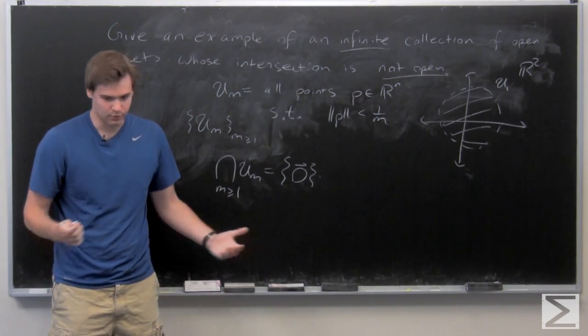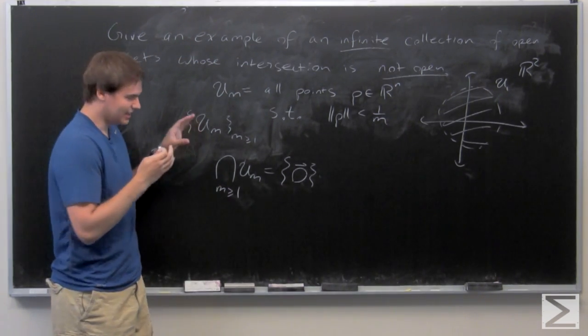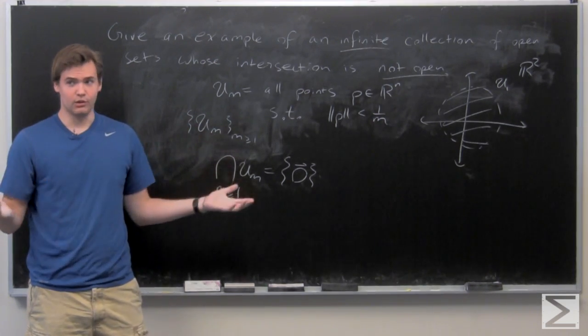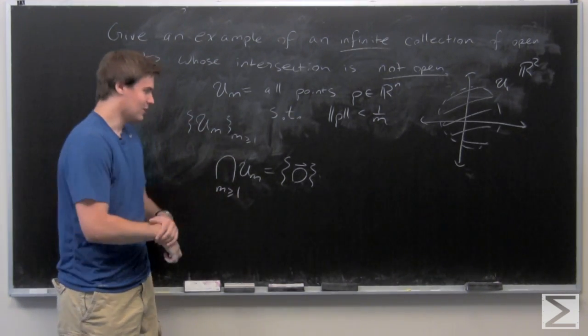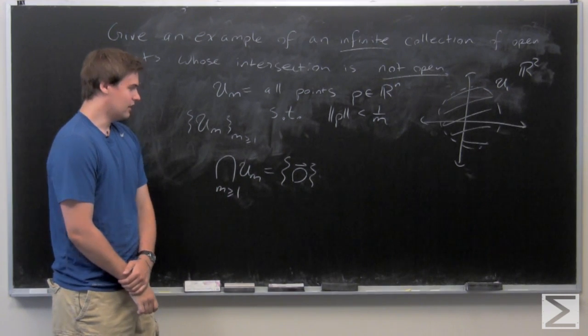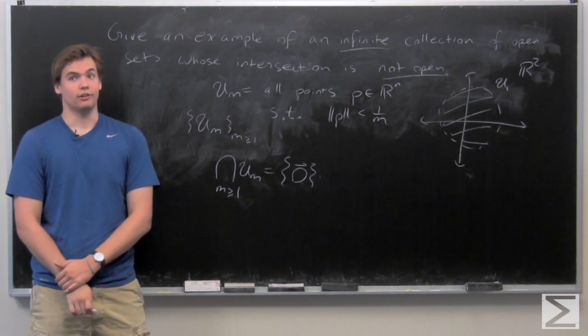Well, from previous work, we've seen that any singleton set consisting of a single point is a closed subset of R^n. So here we have an infinite collection of open sets whose intersection is definitely not open.